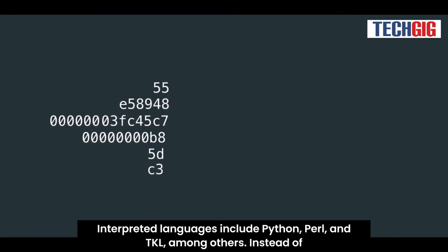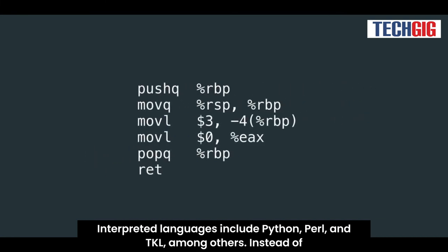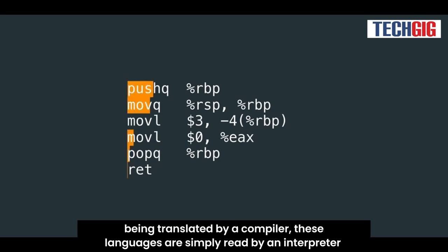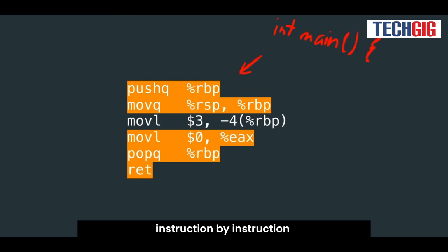Interpreted languages include Python, Perl, and TKL, among others. Instead of being translated by a compiler, these languages are simply read by an interpreter, instruction by instruction.